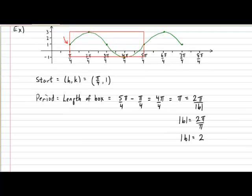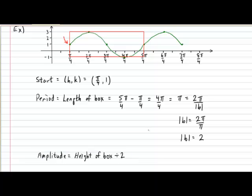Next we may continue taking advantage of the box knowing that the height of the box corresponds to double the amplitude. Therefore the amplitude can be calculated by taking half the height of the box. In our example that will correspond to a height of 4 divided by 2 which is 2 and that reveals to us the value of the absolute value of a. We will decide on the sign of a very shortly.